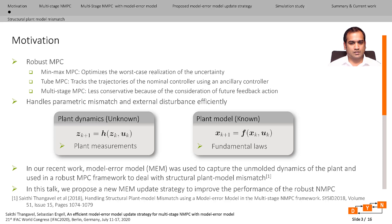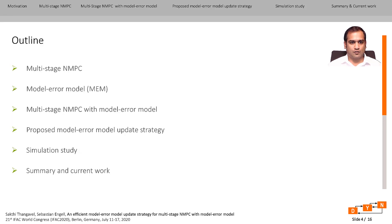In this work, we propose a new model error model update strategy for the multi-stage NMPC using the model error model, whenever the observed measurements invalidate the model error model used inside the multi-stage NMPC. The rest of the talk is organized as follows: first, I will explain the multi-stage NMPC in detail; then the model error model and how it integrates with multi-stage NMPC for robustness against structural plant model mismatch; then the proposed update strategy, followed by simulation studies; and finally a summary and current work.